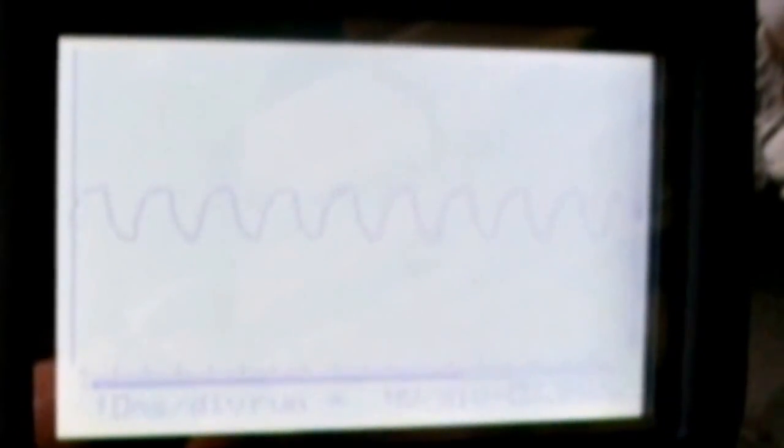You can see it a lot better right there. Still have a little bit of the sawtooth pattern. Now you have more of an AC formation - you have half negative and half positive. See, it's right down the middle.